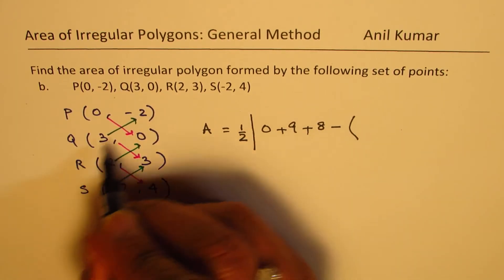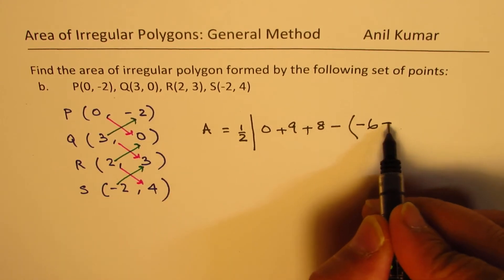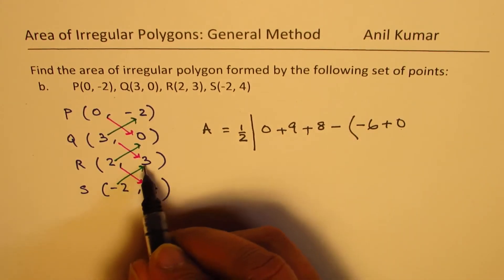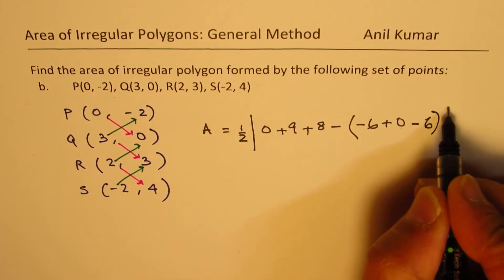2 times minus 2, 3 times minus 2 is minus 6. 2 times 0 is 0. And minus 2 times 3 will be minus 6.